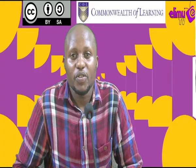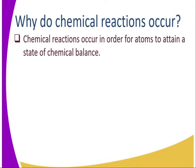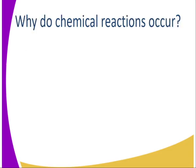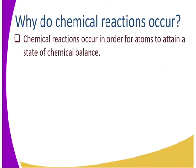The goals of this lesson are: number one, we are going to look at what is an ion — we are going to define an ion. We're also going to explain ion formation. We'll also look at the different types of ions which are formed, and this will help us to distinguish a cation from an anion, basically metal and non-metal.